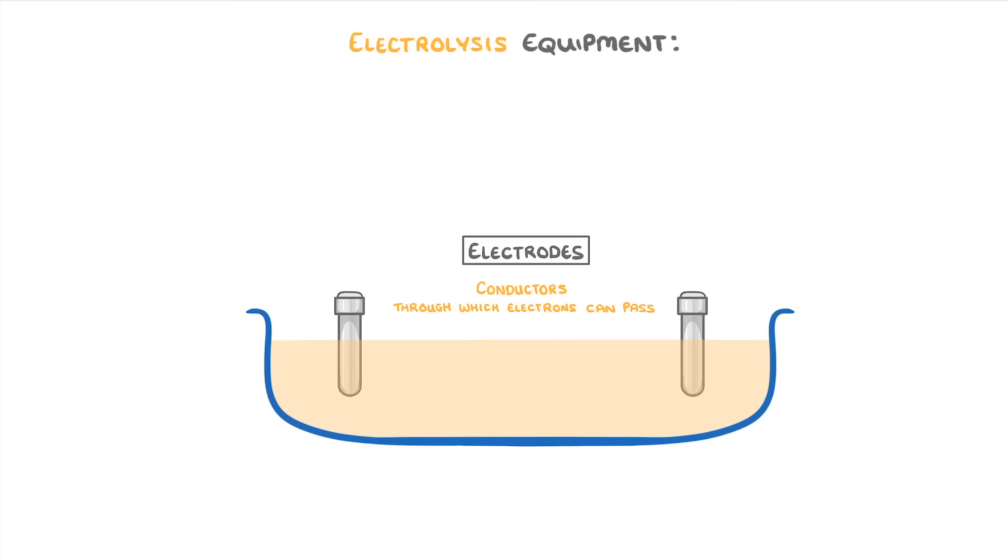On the right, we have the positive electrode, called the anode. And on the left, we have the negative electrode, which we call the cathode. Then we connect these with a wire and some sort of power source, like a battery, so that electrons can flow in a complete circuit.